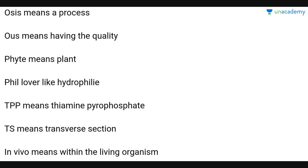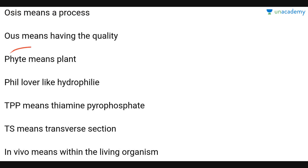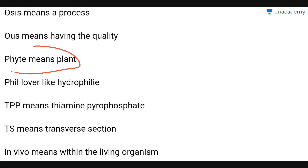'-osis' means process, like osmosis or endosmosis. '-ous' means having the quality of, like in the word 'poisonous' — p-o-i-s-o-n-o-u-s. The '-ous' suffix shows the quality that something is full of poison.